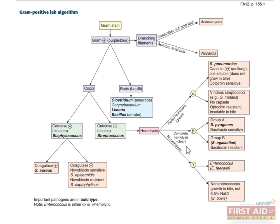The following algorithm for classifying gram-positive microorganisms summarizes how to identify specific bacterial strains based on their unique characteristics. We'll spend some time on the identification of staph and strep species. Each individual bacterium will be discussed in greater detail as you move along in the chapter.